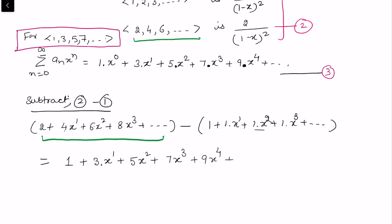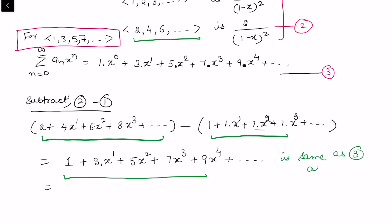So by subtracting the two sequences, we obtain the desired odd-number sequence. This is the same as equation 3 — our desired result.